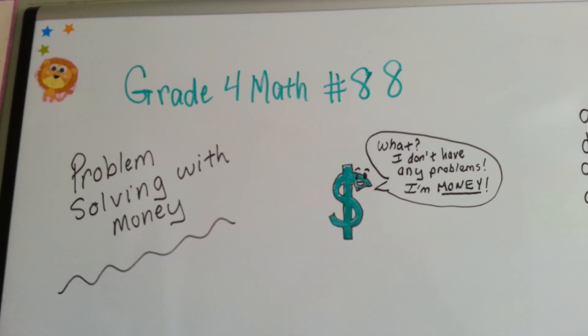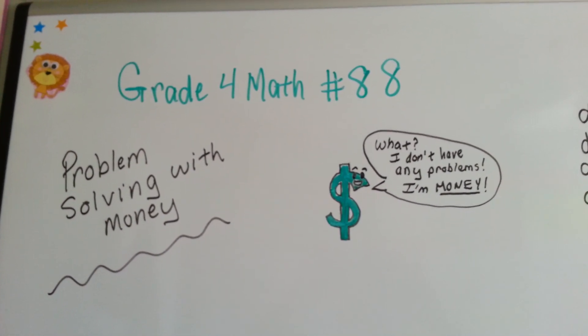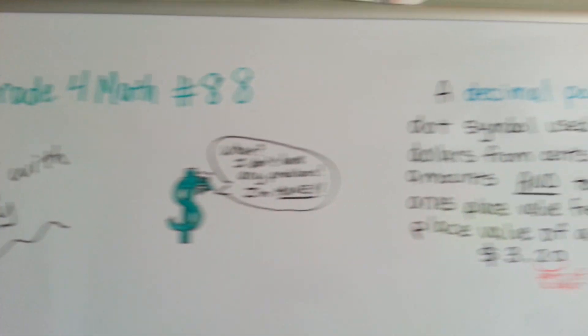Grade 4 math number 88, Problem Solving with Money. We're going to do a real quick review and then we'll get to it.